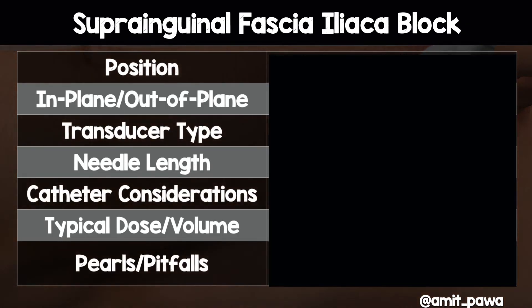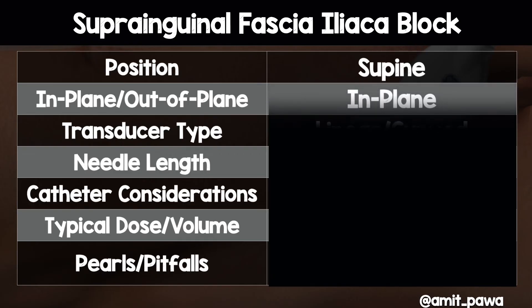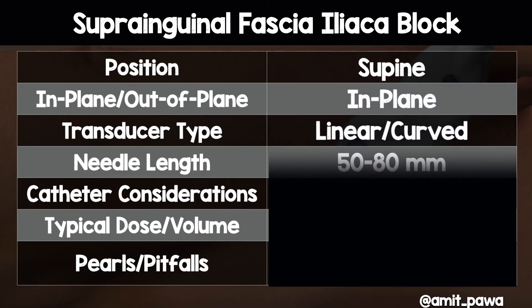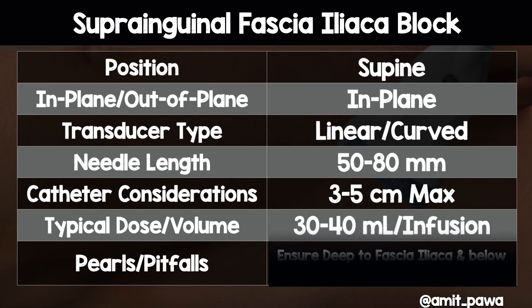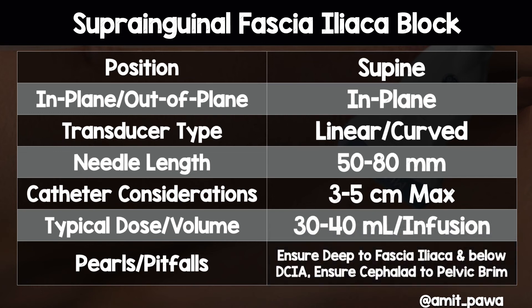How do we summarise? We generally tend to have our patients in the supine position. More often than not, we needle in-plane. You can use a linear or a curved probe, depending on the patient's body habitus, and tend to need a particularly long needle. You're going to place a catheter, insert three to five centimetres, and the typical dose you would administer is about 30 to 40 cc's of local anaesthetic, followed by an infusion. Pearls and pitfalls: make sure you are deep to the fascia iliaca and below the deep circumflex iliac artery, and ensure that you inject cephalad to that pelvic brim.